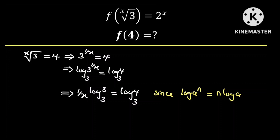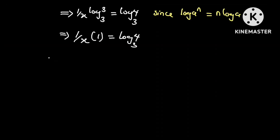Now we know that the log of 3 to the base 3 is just equal to 1. So this implies that 1 over x multiplied by 1 is equal to the log of 4 to the base 3. That is, 1 over x is equal to the log of 4 to the base 3. And if we take the reciprocal of both sides, we are going to have x which is equal to the log of 3 to the base 4.